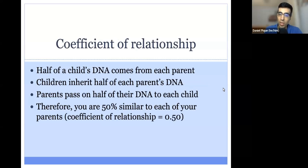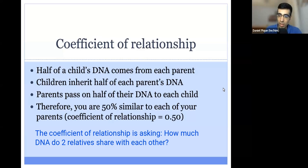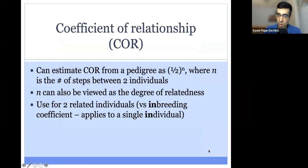Starting with the coefficient of relationship: half of any child's DNA comes from each parent, so 50% comes from their mother and 50% from their father. The mother passes on 50% of her DNA to her child, and the father passes on 50% of his. Therefore, you are 50% similar to each of your parents, giving a coefficient of relationship equal to 0.50. Anyone who is a first degree relative will have a coefficient of relationship of 0.5. The coefficient of relationship, or COR, can be estimated from a pedigree.